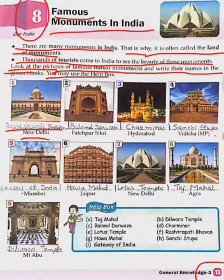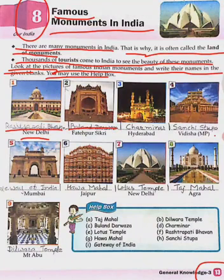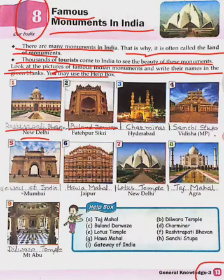Our second monument is Buland Darwaza. The spelling is B-U-L-A-N-D, Buland, D-A-R-W-A-Z-A, Darwaza. Buland Darwaza is situated in Fatehpur Sikri.